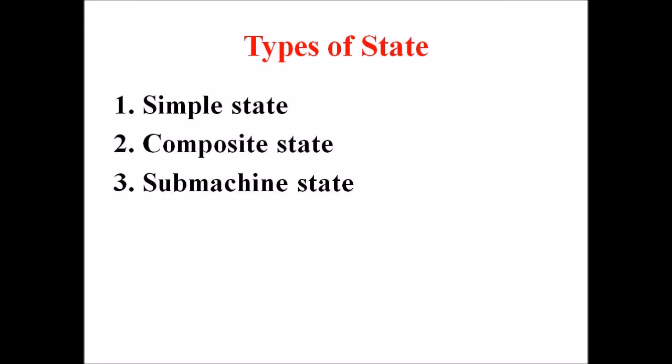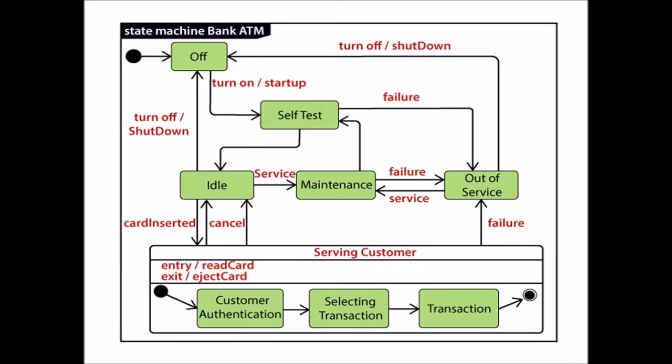Now we are dealing with different types of states. UML consists of three different states: simple state, composite state, and submachine state. A simple state does not contain any substructure. A composite state consists of nested substates and does not contain more than one initial state and one final state; it can be nested to any level. The submachine state is semantically identical to the composite state, but it can be reused.